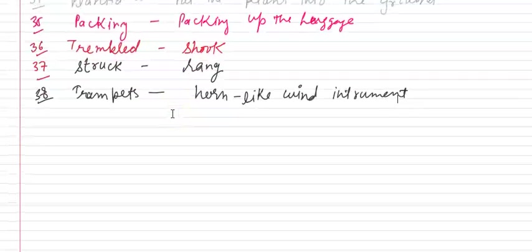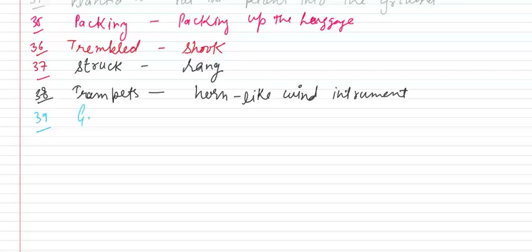Next is 39th word. 39th is go on. Go on means lagatar, matlab continue. Continue.